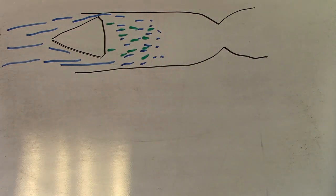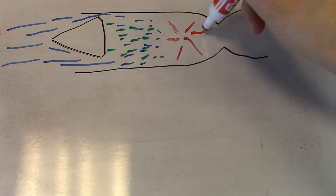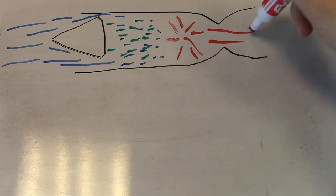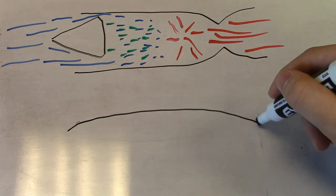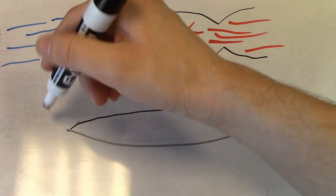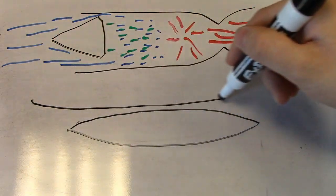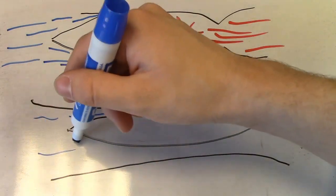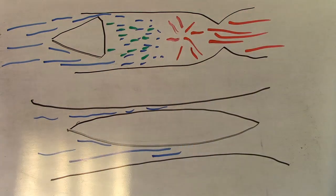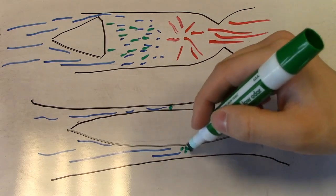A scramjet, which actually stands for supersonic combusting ramjet, follows nearly the exact same process. The only difference is that a scramjet doesn't slow down the air once it is forced inside. Rather, a scramjet mixes the fuel with the air and combusts it, all while the mixture is traveling at supersonic speeds. Note that ramjets and scramjets require the aircraft to be moving quite quickly to actually work.